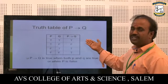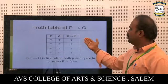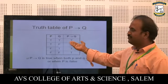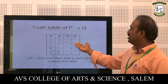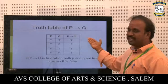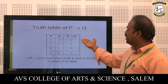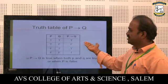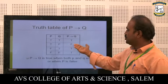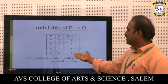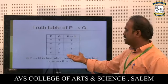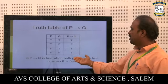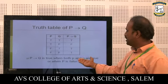Truth table for P → Q: True and True gives True. True and False gives False. False and True gives True. False and False gives True. The conditional P → Q is true when both P and Q are true, or when P is false.